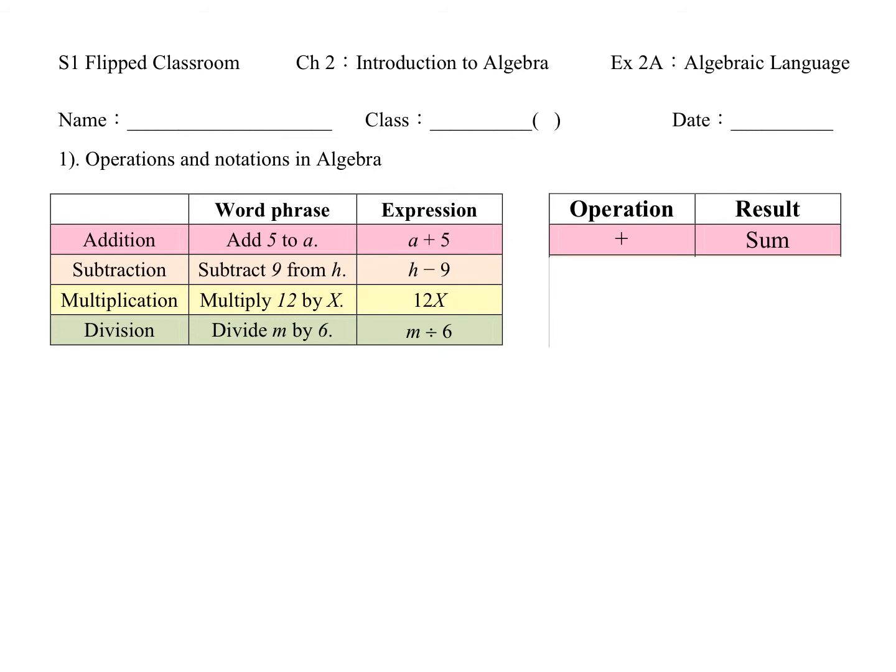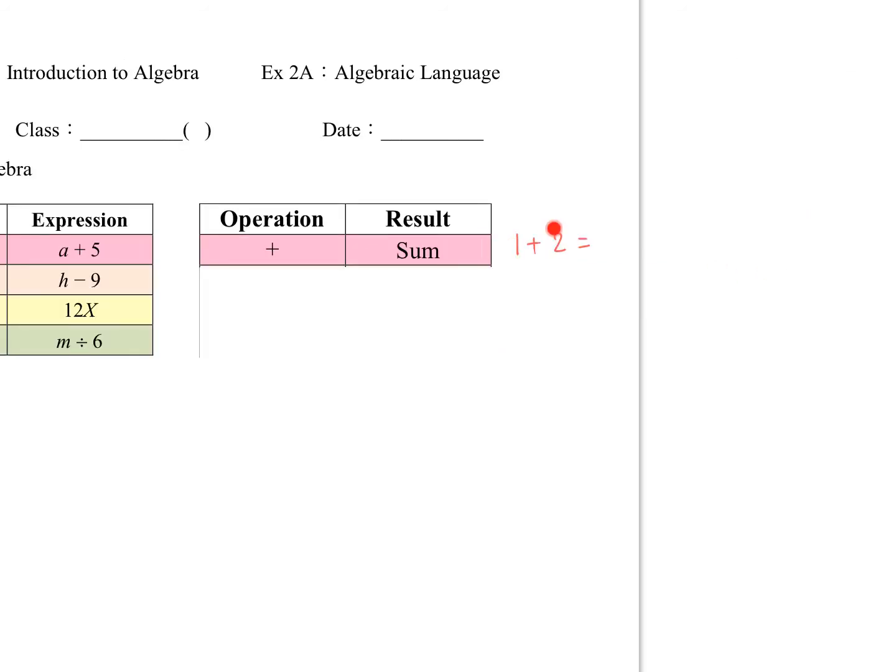Next, we need to know the result of addition, which we call sum. The sum of 1 plus 2 is 3. The sum is 3. Next, we talk about subtraction. The result of subtraction is difference. Let's say 8 minus 6. The difference is 2.